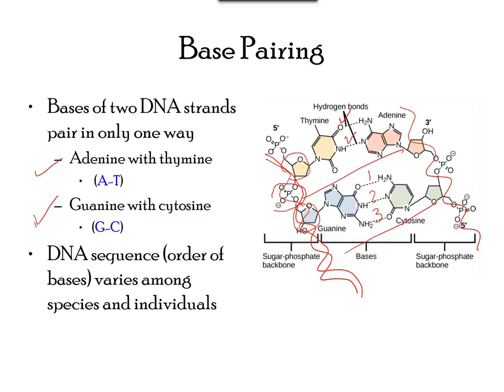The two strands are anti-parallel in nature. Notice that the five-prime end of each strand are opposite. The diameter of the helix always stays uniform.